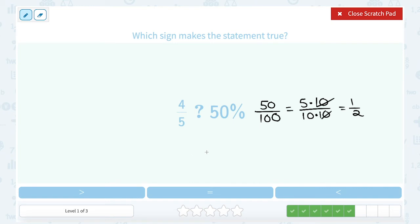At this point, you might already know. If you're not sure, what you could do is make them have the same or common denominators. So what would be the common denominator between 5 and 2? Well, the common denominator would be 10.